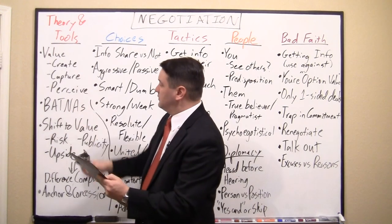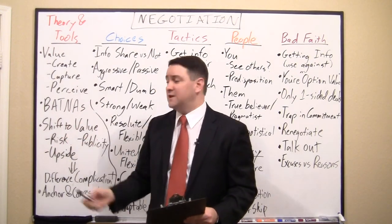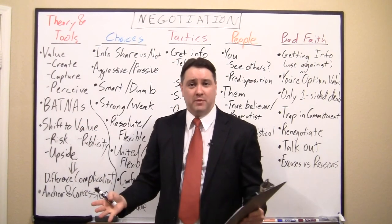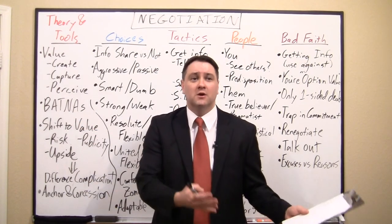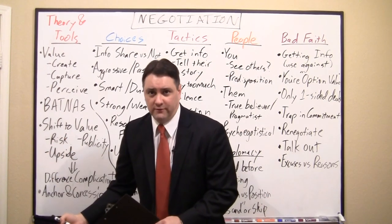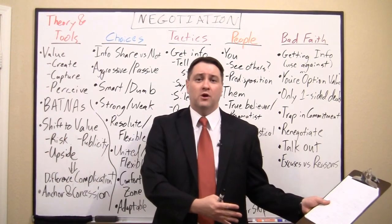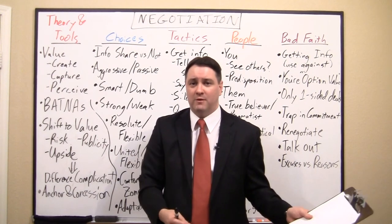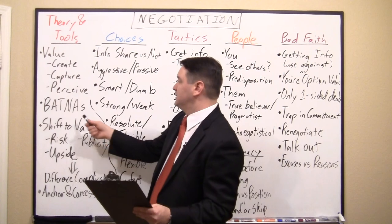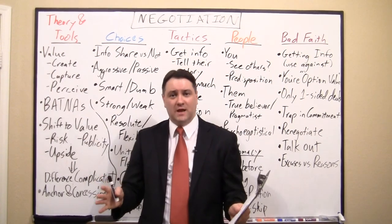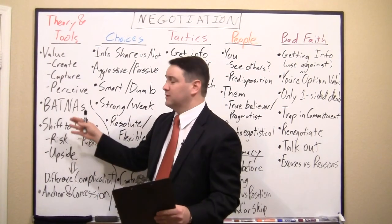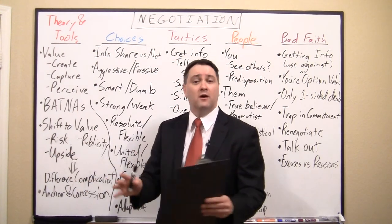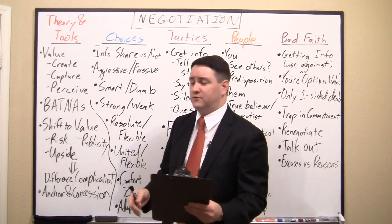The next important concept is the BATNA — Best Alternative to a Negotiated Agreement. A common mistake is going into a negotiation without knowing your alternative. Without knowing your alternative, you don't know at what point you should stop negotiating, or what's a good deal versus a bad one. It can serve as your reservation price — the price at which you would walk away — though it's not always about price.